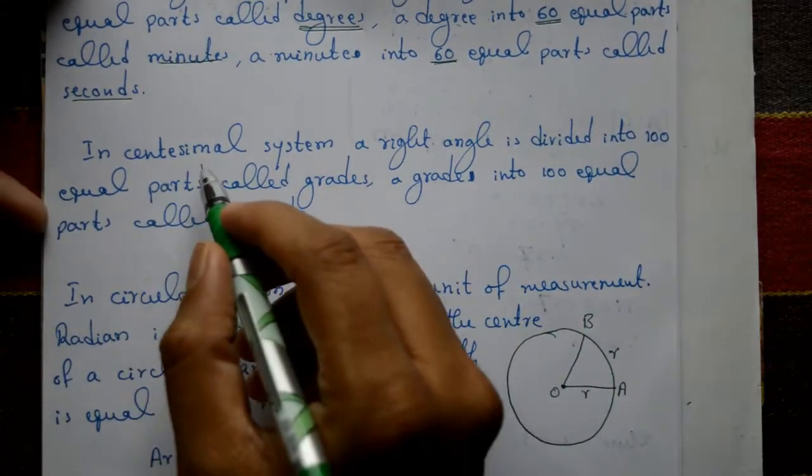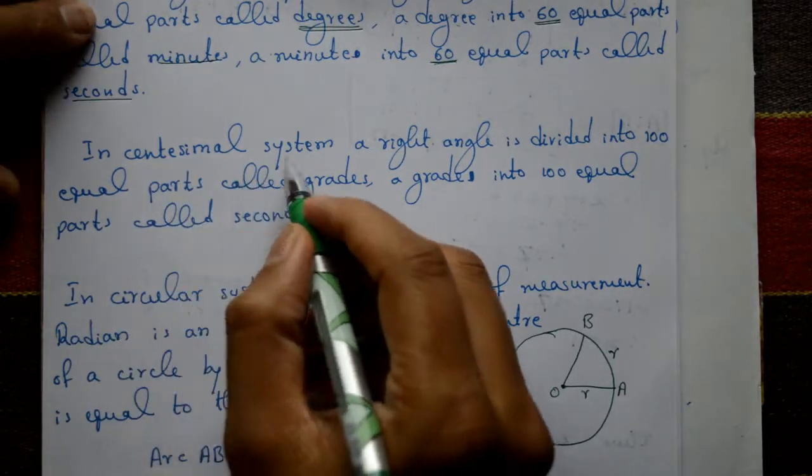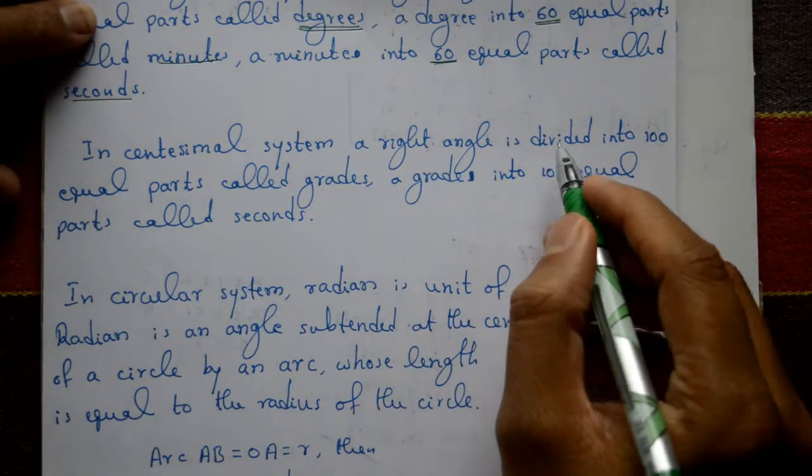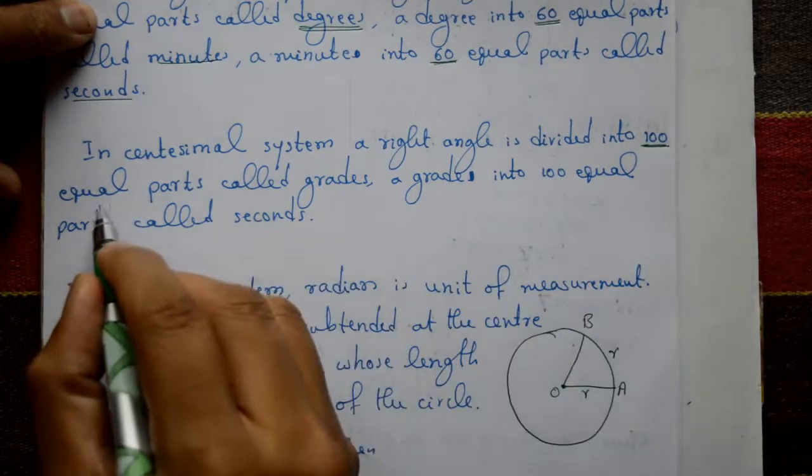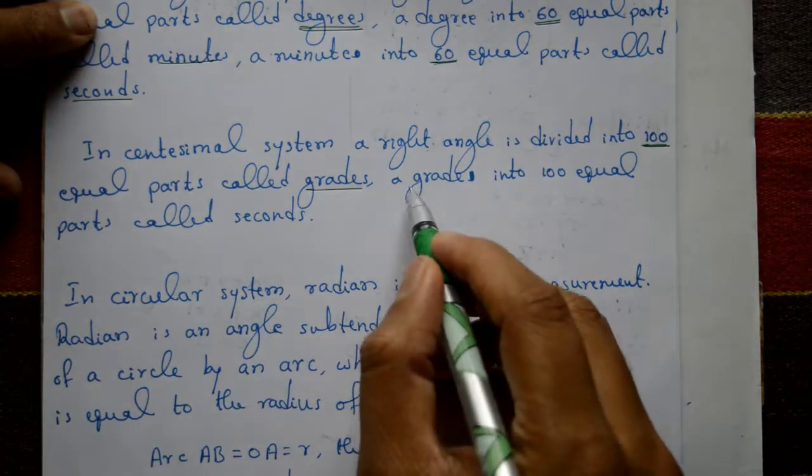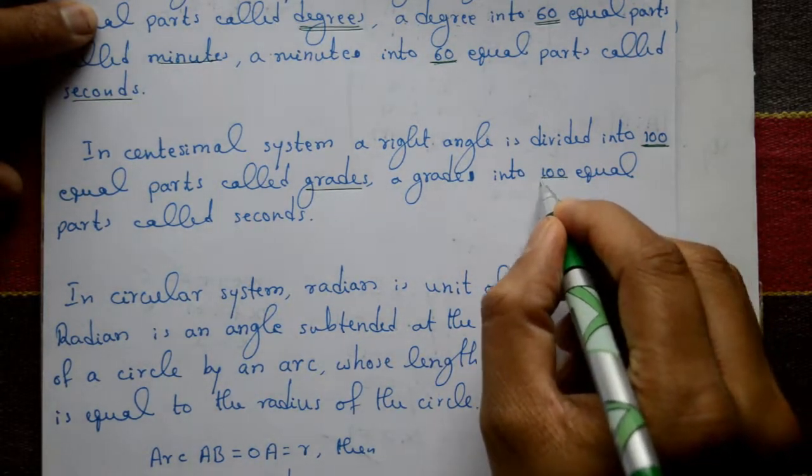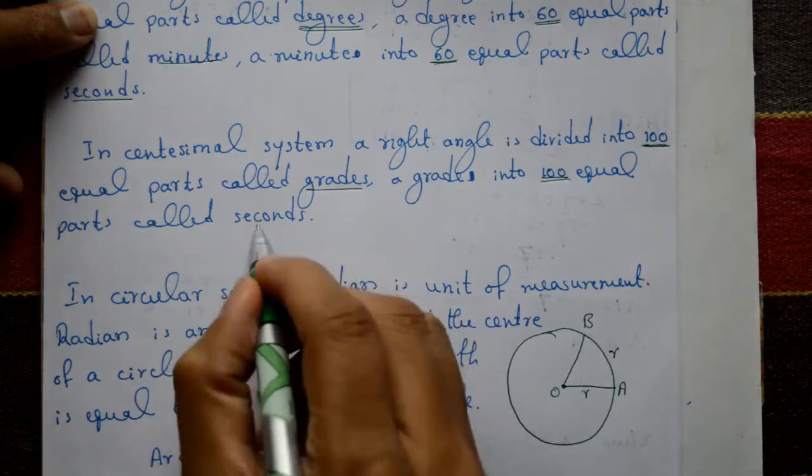In centisimal system, a right angle is divided into 100 equal parts called grades. A grade is divided into 100 equal parts called seconds.